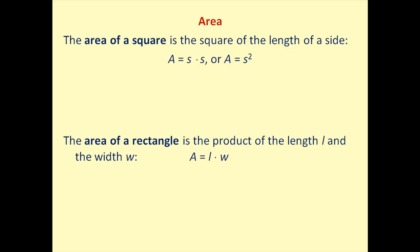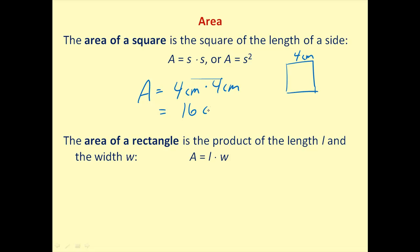Let's talk about area now. The area of a square is the square of the length of a side — all sides have the same length. If this length is equal to 4 centimeters, then the area equals 4 centimeters times 4 centimeters, which equals 16 centimeters squared. Notice the units for area are square units. If we divided this square into square centimeters, there would be 16 of them inside.